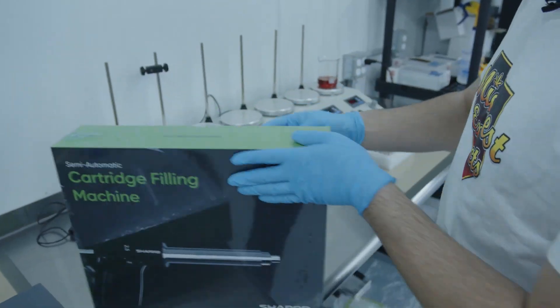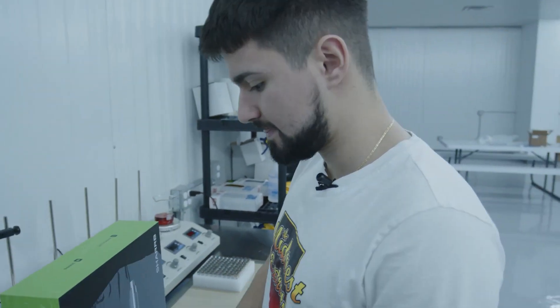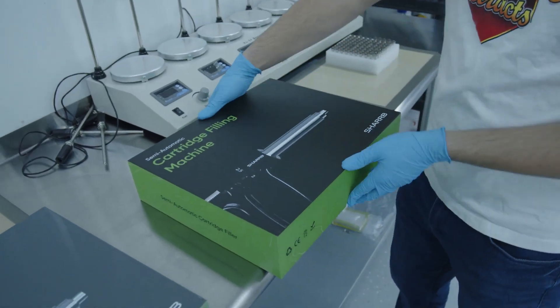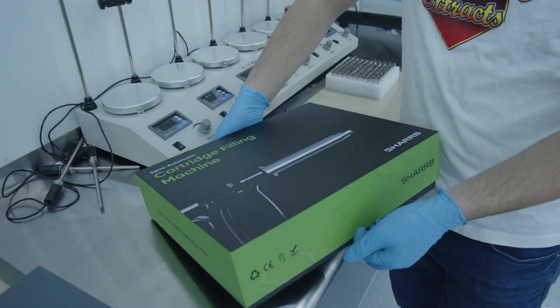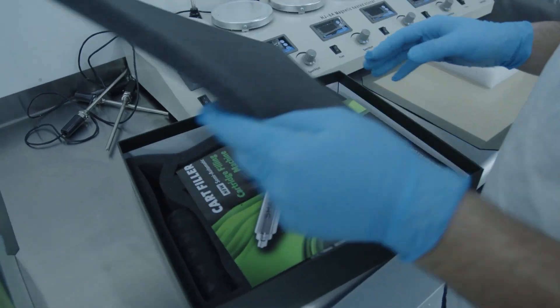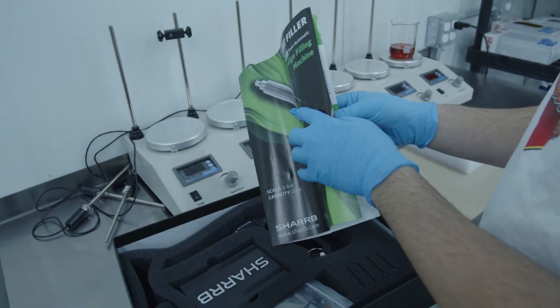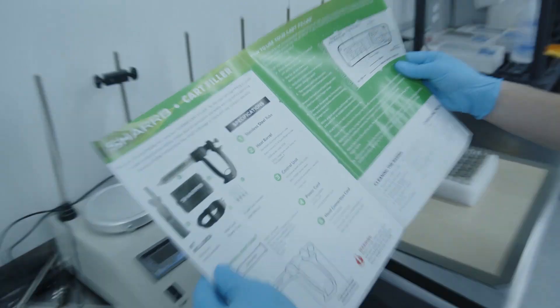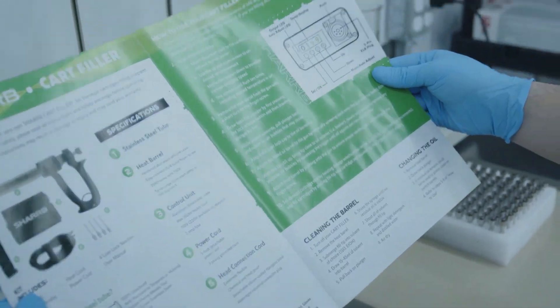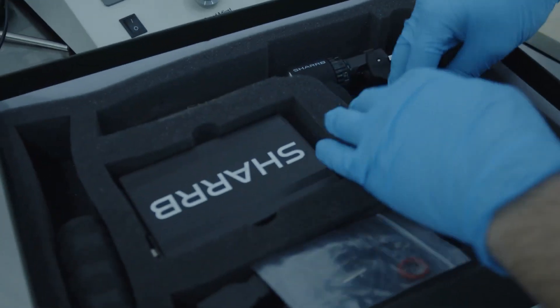They're going to come saran wrapped. This is the box, opens from the bottom. I'm going to show you guys what comes with it. It's got a manual, in case you don't want to watch the video and you want to read, everything's in here, how to use it, all that. This is our socials. And this is the cart filler.